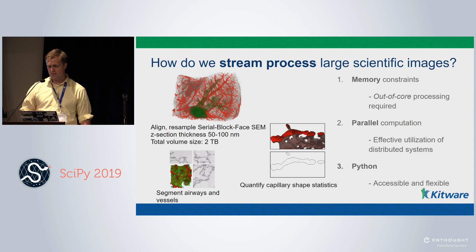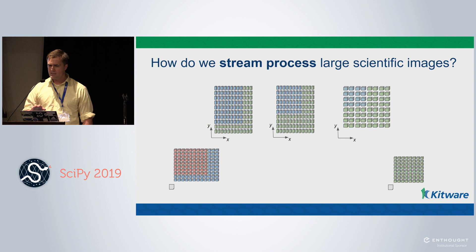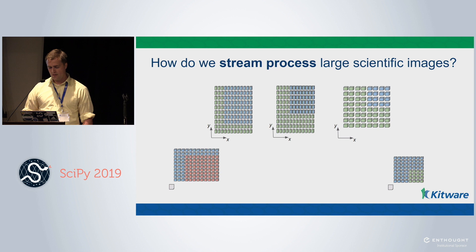The goal is to discuss how we do stream processing of large scientific images. This is the first approach for handling this limited memory problem. We want to set up a processing pipeline and process chunks of the data — that's what we mean by stream processing. We go through and compute chunks of the data incrementally, which limits the amount of memory we're working with, and if we do that in parallel with different chunks we can compute things faster.